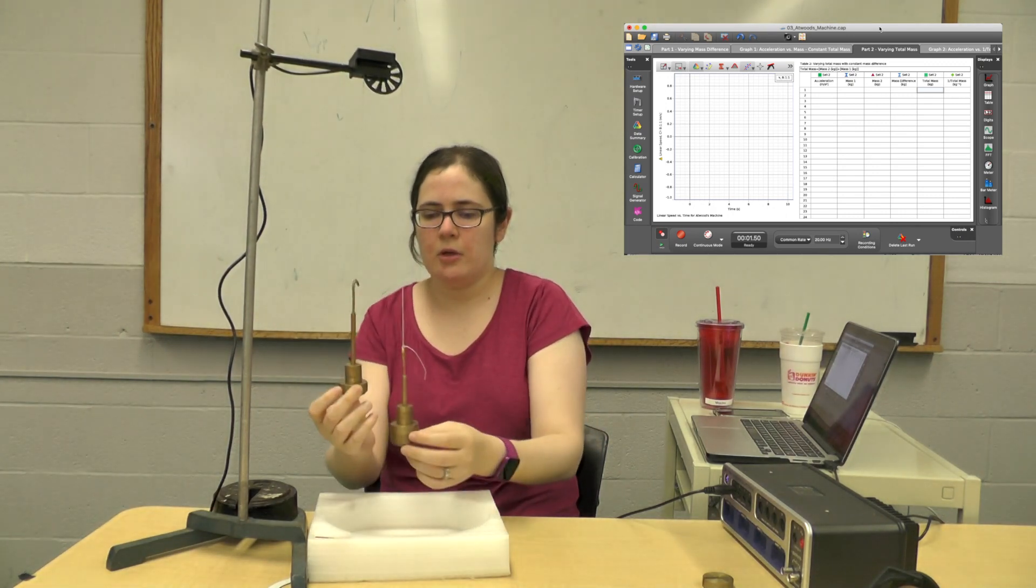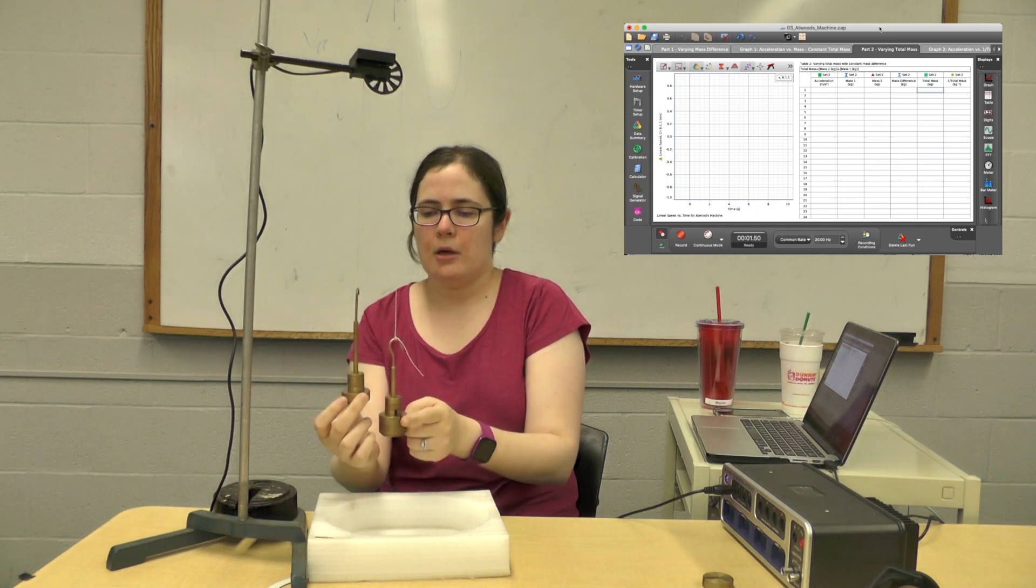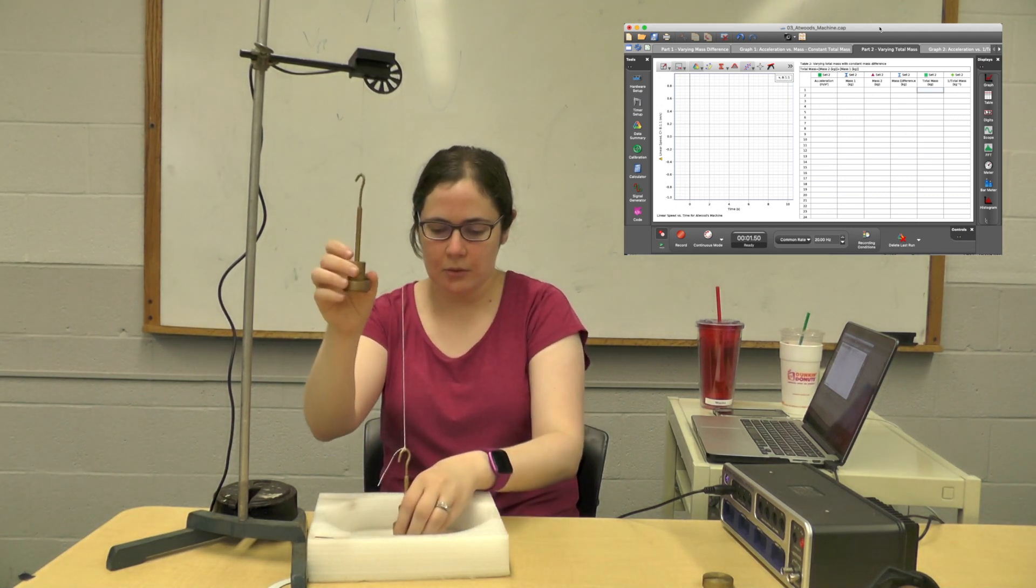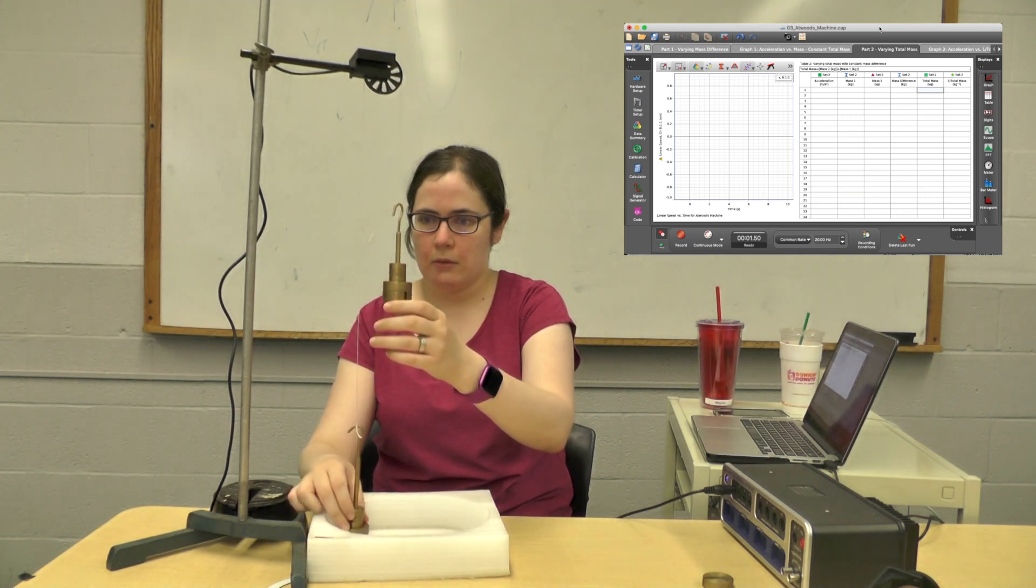Okay, we have a heavy and a light, and then the difference between the two of them is going to be this 100 gram mass. So after each run I'm going to take off one 20 grams from both of them, so they'll have the same mass difference, but the total mass of the system is going to be different and we'll see how that goes.